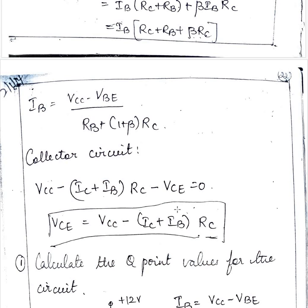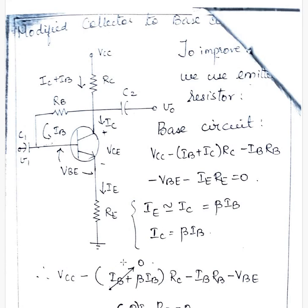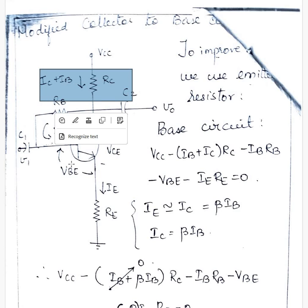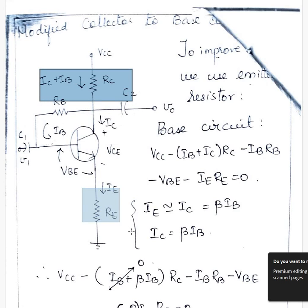So next is we have a modified collector to base bias which includes a emitter resistor RE. So now to write the KVL VCC minus IB plus IC into RC minus IBRB minus VBE equal to 0.